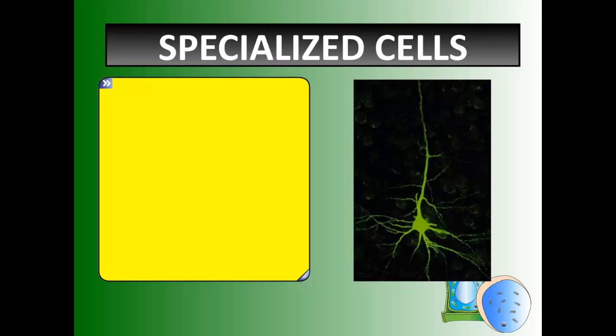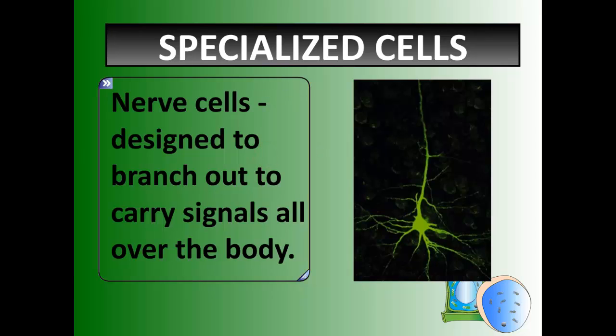Some examples. We have this type of cell, which is a neuron cell, and this nerve cell is designed to branch out to carry signals all over the body. You can tell it has all these extensions to connect to multiple places. The function clearly serves the structure.